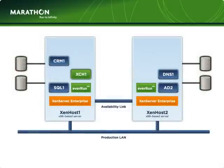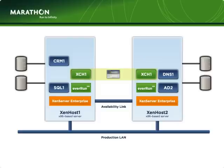EverRun VM will insert itself below the guest, clone that guest to the selected ZenServer host, and then tie the two guests together using its own virtualization architecture that treats the two guests as a single, fault-tolerant operating environment. The Exchange 1 environment now has fault-tolerant class availability protection without any manual configuration, setup, or policy creation. The application remains untouched and unmodified, yet is inherently resilient to faults and failures.